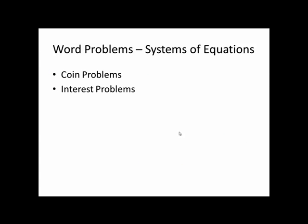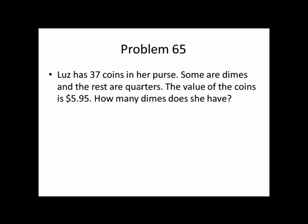Last problem we'll take a look at for this video is a word problem. We'll take a look at a coin problem. Luz has 37 coins in her purse, some dimes, the rest are quarters. The value of the coins is $5.95. How many dimes does she have? So we're going to let the number of dimes be represented by the variable D, and the number of quarters by the variable Q. Our first equation comes from the fact that there are 37 coins. So if we add the number of dimes to the number of quarters, the result is 37.